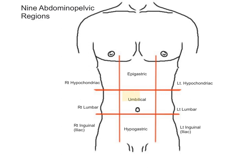The umbilical region, located in the center square of the grid, contains parts of both the transverse colon and the small intestine. The left lumbar region contains parts of the large intestine, small intestine, and left kidney.